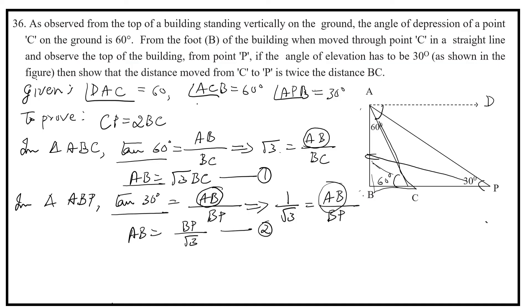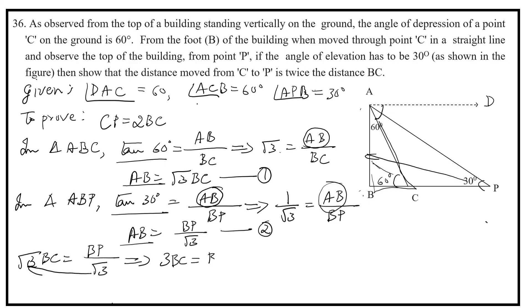The left-hand side is the same in both equation 1 and equation 2, so the right-hand sides must be equal. Therefore root 3 times BC equals BP divided by root 3. Multiplying both sides: root 3 times root 3, which is 3, so 3 BC equals BP.